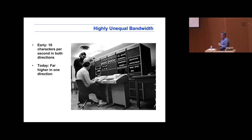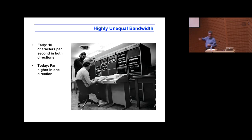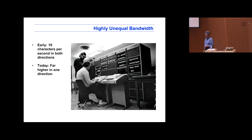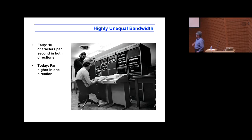It wasn't always the case. This is not the natural state of the field. Anyone know what the device is in the front? That thing that looks like a typewriter? Teletype. So this was the way people interacted with computers. The first interactive computers, after punch cards, used a device like this. It looks like a typewriter, it's got a keyboard. What it really is like is a shell window — you type in your shell window and the screen just keeps scrolling up. Except there, the scrolling up thing was a roll of paper.